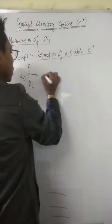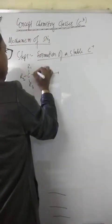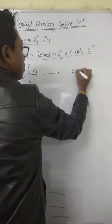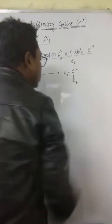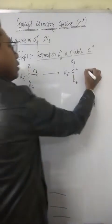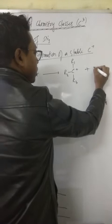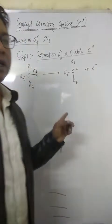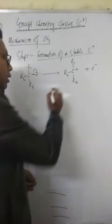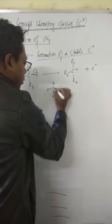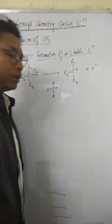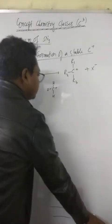The tertiary carbocation is formed which is stable. We can see here that if we take methyl halide, we will get methyl carbocation which is not stable. So in methyl halide, no SN1 reaction will take place.